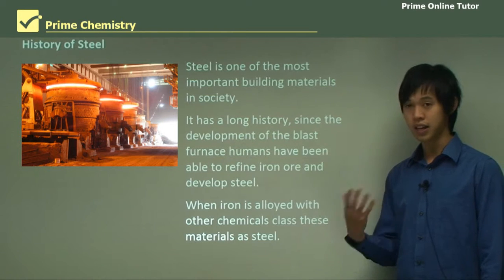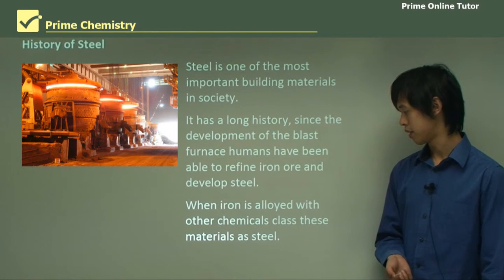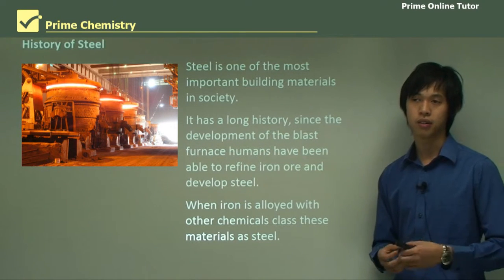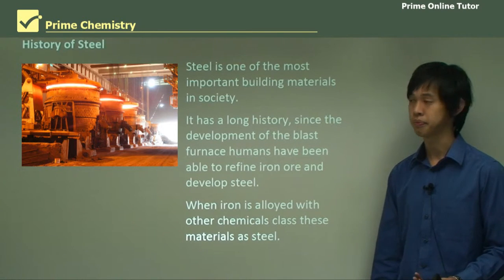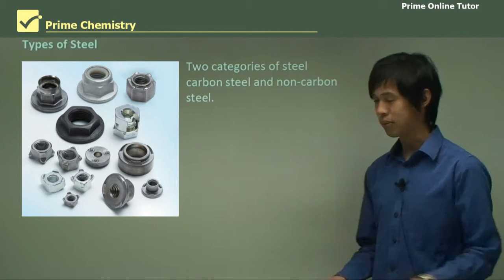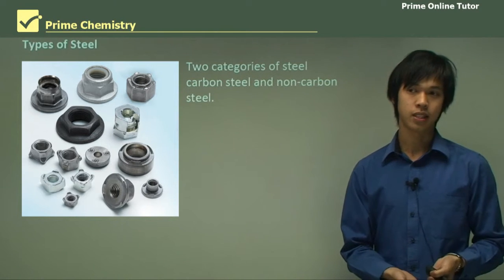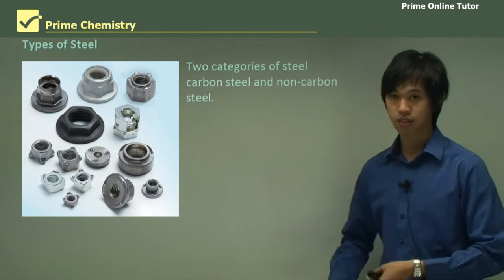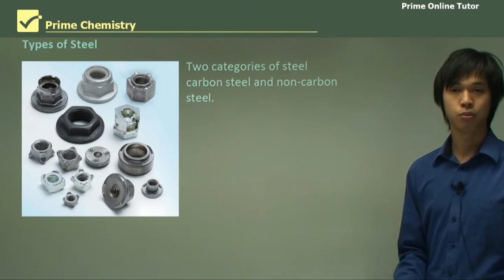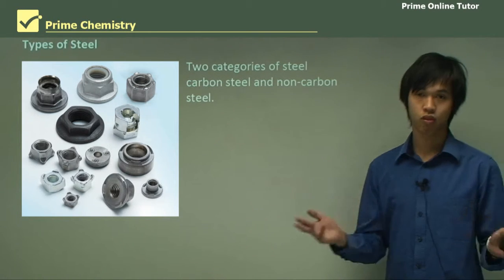When iron is alloyed with other elements or chemicals, we classify these metals as steel. Steel is such a useful material that people have been tweaking it and making new types just for different applications. In general, we categorize steel into two categories: carbon steels and non-carbon steels.